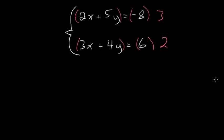So multiplying the top equation by 3, we're left with 6x plus 15y equals minus 24. The bottom equation by 2 gives us 6x plus 8y equals 12.